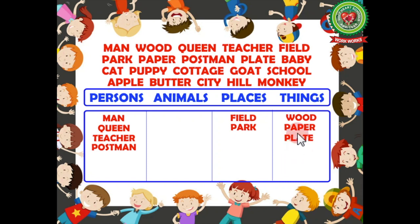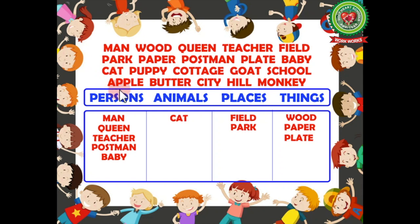Next we have 'plate' — P-L-A-T-E. Plate is the name of a thing, so it is a noun. Next we have 'baby' — B-A-B-Y. Baby is the name of a person, so it is a noun. Next we have 'cat' — C-A-T. Cat is the name of an animal, so it is a noun. Next we have 'puppy' — P-U-P-P-Y.